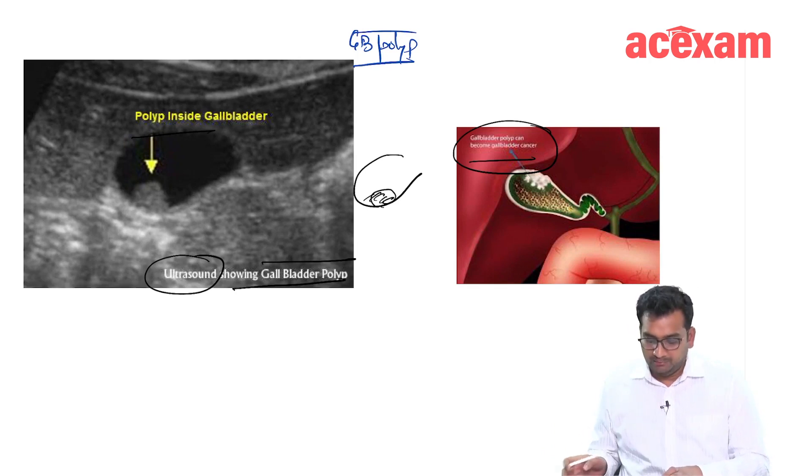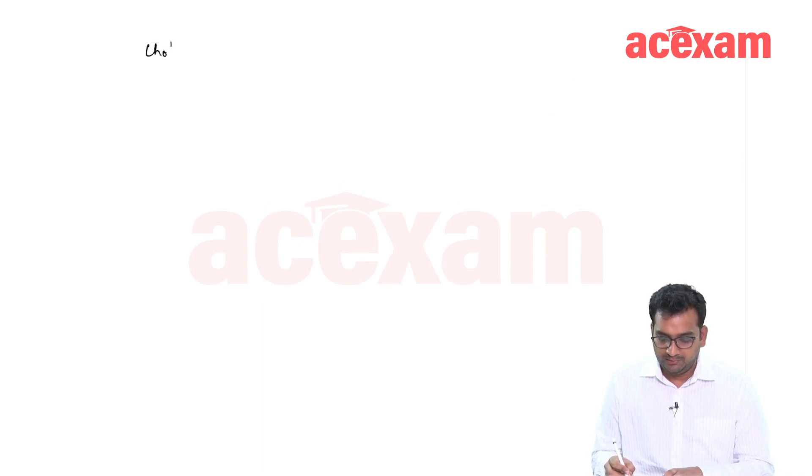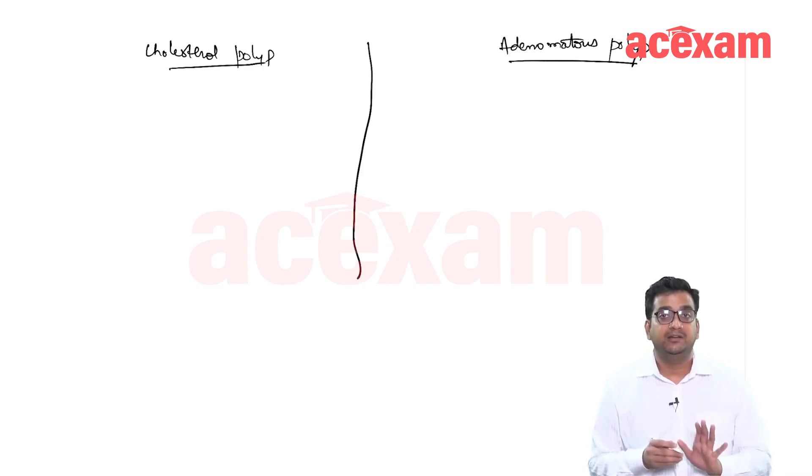The gallbladder polyps are of two types. They are cholesterol polyp and adenomatous polyp. It is the adenomatous polyp that are premalignant.